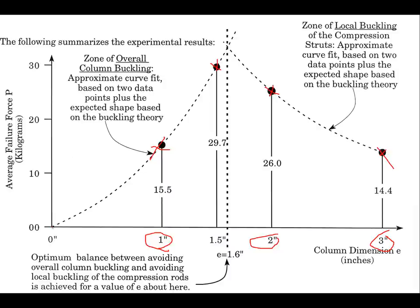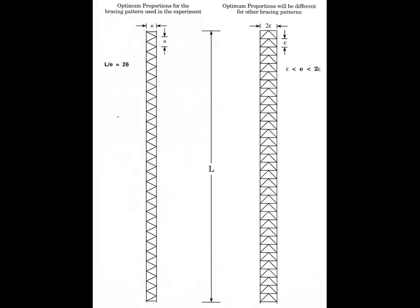We observed experimental points and drew the theoretical curve. A column of zero breadth has zero strength because it will buckle under no force, but as the column gets greater breadth it becomes more resistive to buckling. Then we cross over a transition where local buckling becomes the issue, and as the spacing of brace points gets further and further apart, the column actually gets weaker. The optimum column dimension for this particular geometry and length was 1.6 inches.